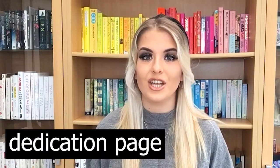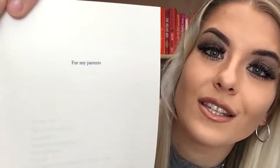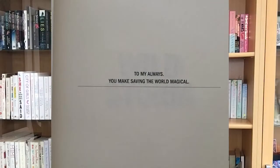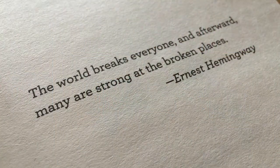Have you ever seen in a book where it says 'for my daughter', 'for my mom', or 'for Jane Doe'? That is called a dedication page. This one, for example, says 'for my parents'. It's self-explanatory — it's who the book is dedicated to, written from the author.